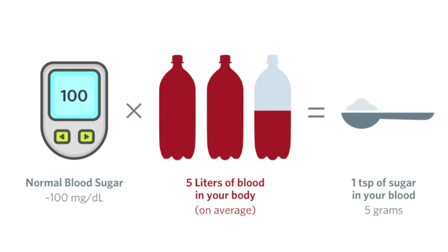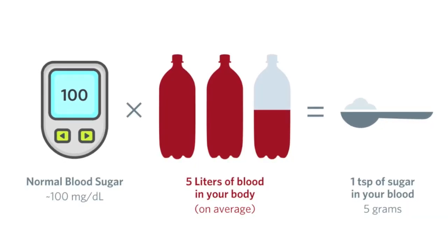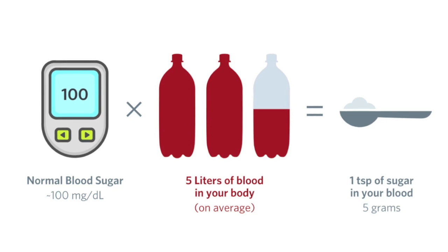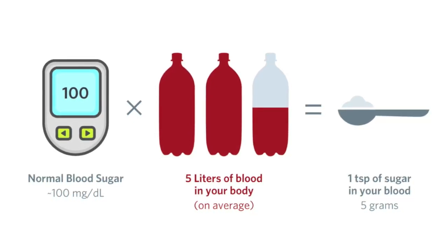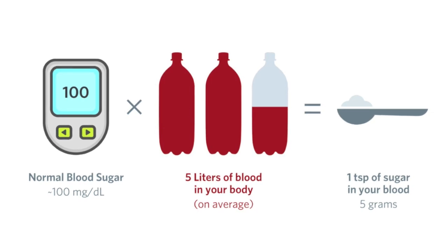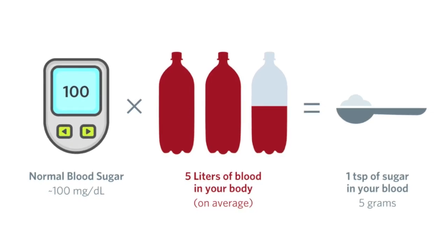A healthy level of sugar in the blood is approximately 80 to 100 milligrams per deciliter. This is the equivalent of approximately one teaspoon of sugar per five liters of blood — so visually imagine a teaspoon of sugar per five liters of blood. Your body is going to kick into action once the glucose moves from your small intestines and into the bloodstream. This is where it all starts to break down.